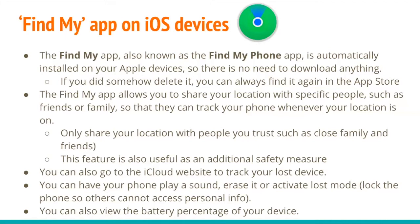You can also go to the iCloud website to track your lost device. You can have your phone play a sound, erase what's on your phone, or activate lost mode by locking the phone so that others cannot access your personal info. You can also view the battery percentage of your device from the iCloud website.